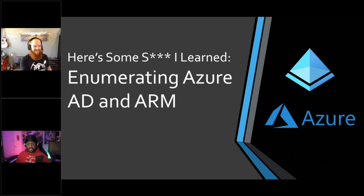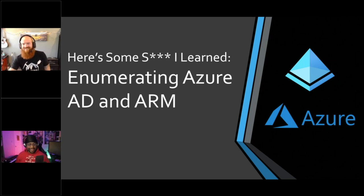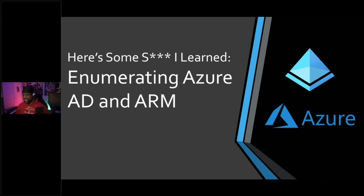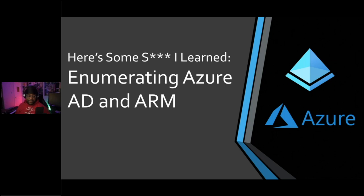The talk title is: 'Here's Some Stuff I Learned Enumerating Azure and Azure AD.' So the title of this talk is 'Here's Some SWAG I Learned' — the asterisks clearly stand for WAG — and it's enumerating Azure AD and ARM. I've done this talk a few times, but I want to talk about some new things that have happened over the last couple of months. So let's get this started.